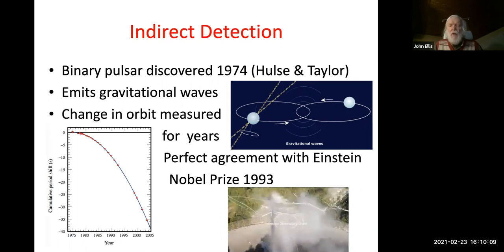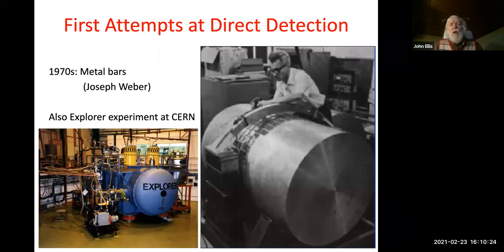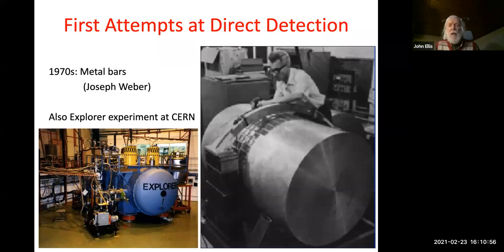Unfortunately the Arecibo radio telescope is no more — as you may have heard, just a few months ago it collapsed, and you can find very dramatic movies of the collapse on YouTube. That was the first indirect detection of gravitational waves. The first attempts at direct detection were made using metal bars, in particular by Joe Weber. There was also a cryogenic metal bar experiment hosted by CERN in the 1980s called Explorer, but none of these experiments found any evidence for gravitational waves — we now understand that their sensitivity was insufficient.